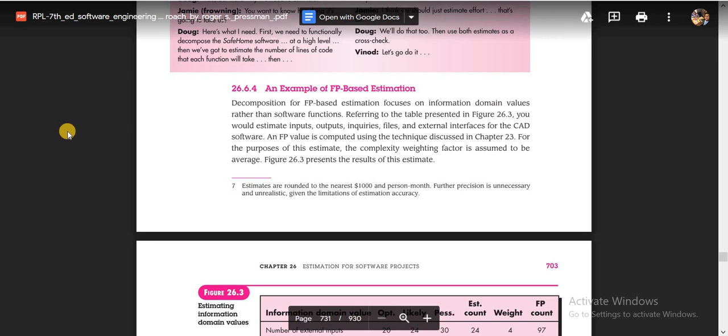LOC-based estimation, as we saw, is when we develop a system and divide the entire system into core functions. For each functional unit, we estimate the line of code, and then by adding up the estimated lines of code for each functional unit, we estimate the total lines of code for our system.